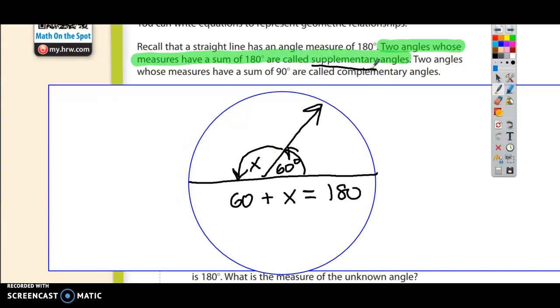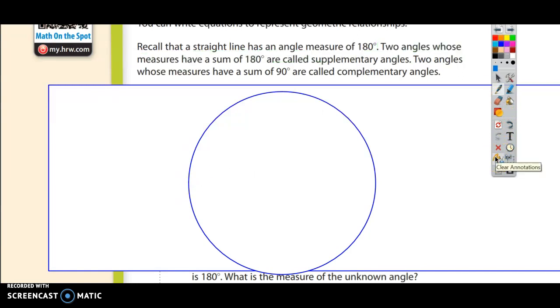Complementary is the same thing except it's just 90. So once again, you know that a full circle is 360 degrees. Well, a half a circle would be 180. What about a fourth of a circle?